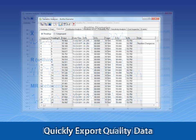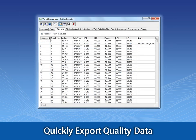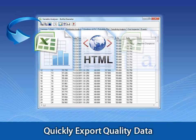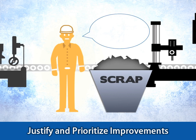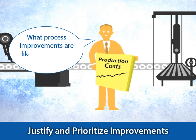You can use a data grid to get a clean view of raw data, and quickly export that data to Excel and other tools. And you can calculate production costs using WinSPC's Patent Pending Cost Analysis tool, and get answers to questions like: how much is variation costing me, and what process improvements are likely to yield the most savings?